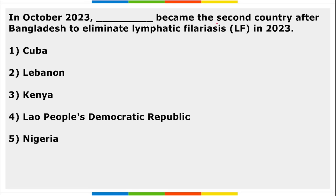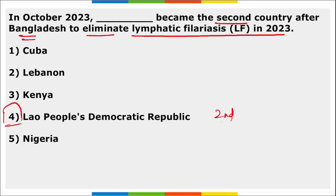Next, in October, Lao People's Democratic Republic became the second country after Bangladesh to eliminate lymphatic filariasis in 2023. Remember: which is the first country? Bangladesh. The first country to eliminate lymphatic filariasis was Bangladesh, followed on second position now by Lao People's Democratic Republic.